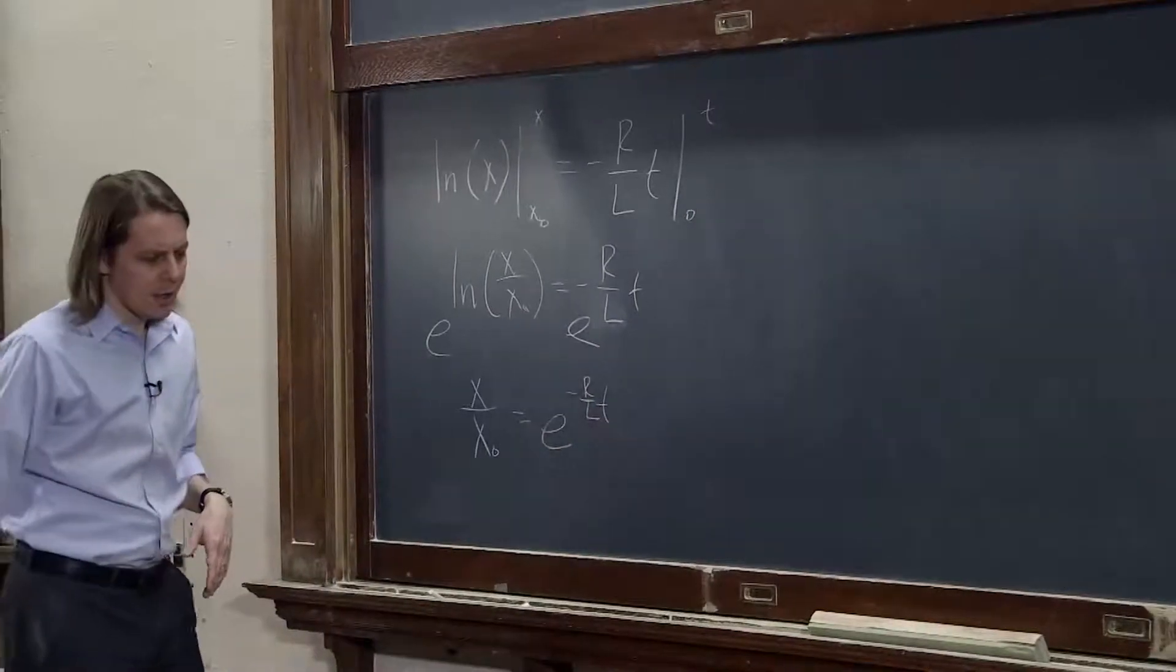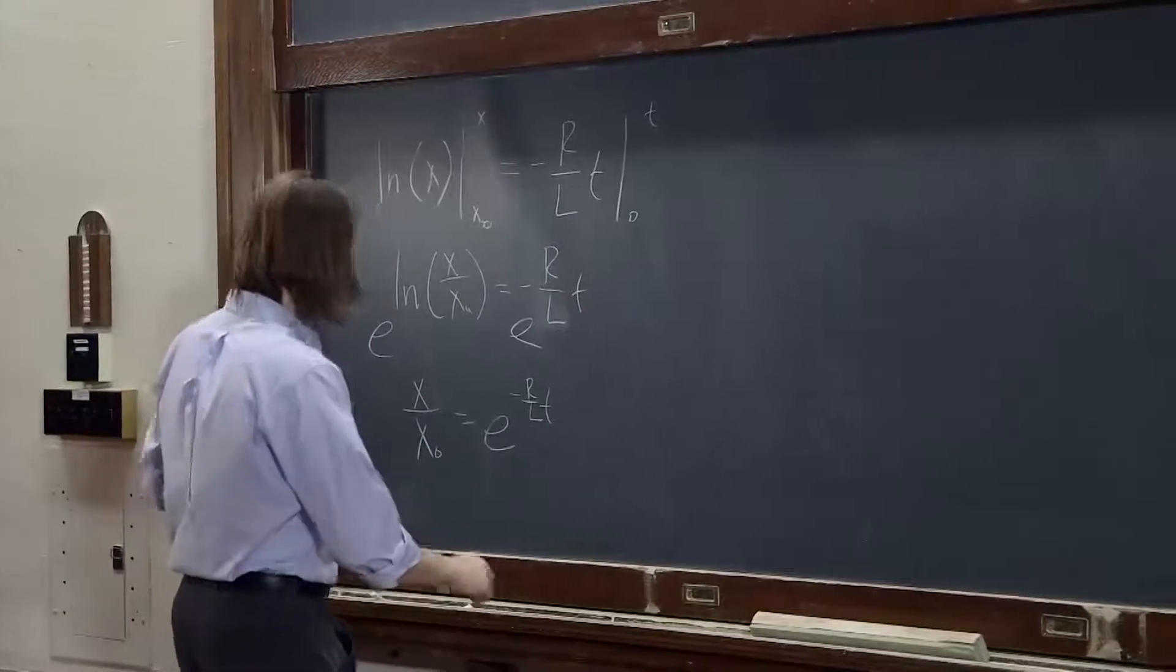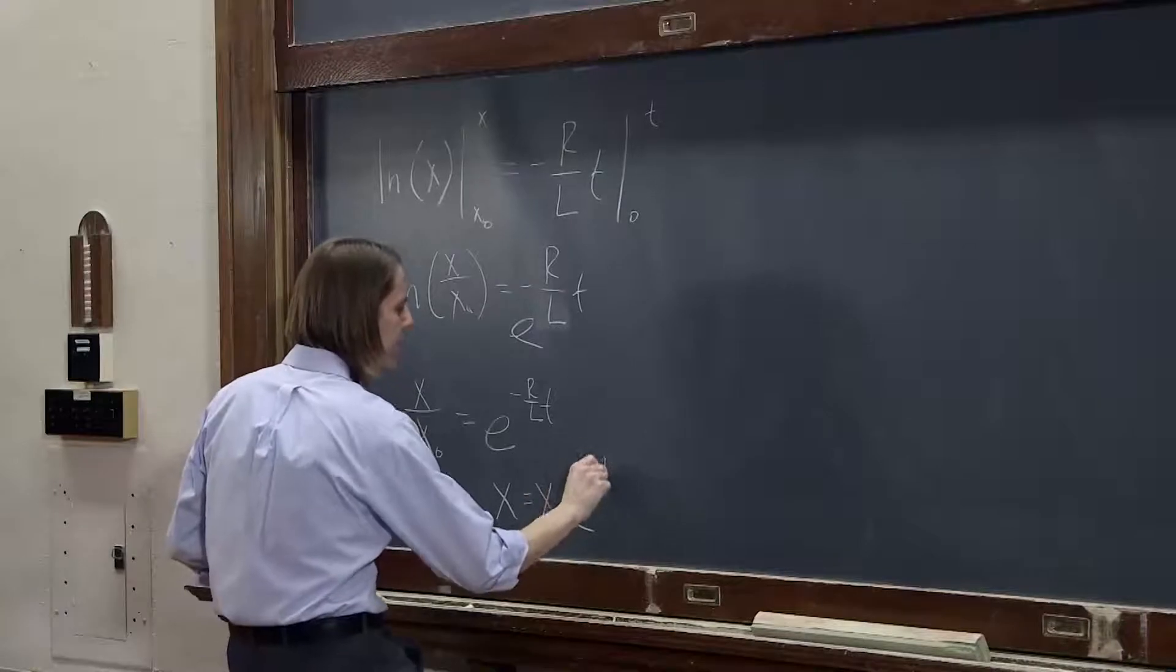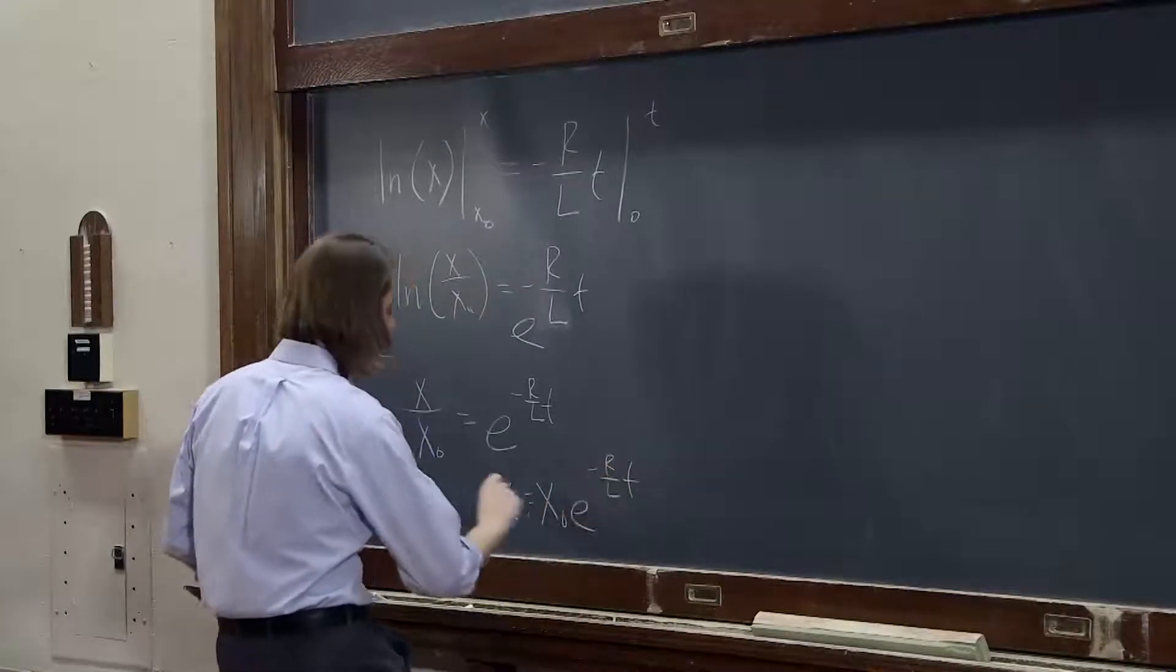and we could even go one more step and write it in the form you would normally see at x equals x naught e to the minus r over l t.